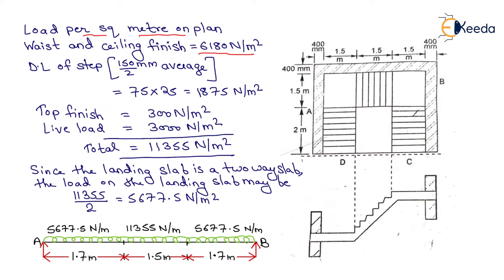Dead load of steps: 150/2 = 75 mm (average value), so 75 × 25 = 1875 N/m². Top finish = 300 N/m². Live load = 3000 N/m². Total load = 11355 N/m². Since the landing slab is a two-way slab, the load on the landing slab may be taken as 11355 / 2 = 5677.5 N/m².